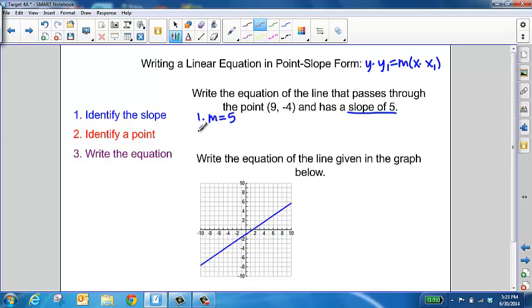Now the second part is to identify a point, and we already know that the point we want our line to pass through is (9, -4). So then the last step is just to write the equation using y minus y₁ equals m times x minus x₁.